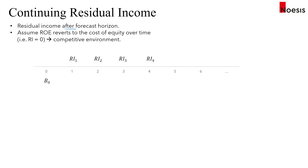Looking at this timeline, let's say our forecast horizon is four years. We have the current book value per share and then we have the residual income for year one, forecasting all the way up to year four. After year four, we have year five and year six to consider.